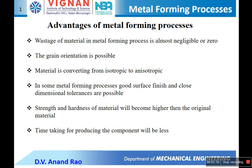Some of the advantages of metal forming processes: the wastage of material is almost negligible or zero. Grain orientation is possible, which improves mechanical properties. Metal forming processes are useful to convert materials from isotropic to anisotropic. In some processes, good surface finish and close dimensional tolerances are possible. Strength and hardness of material become higher than the original material, and time taken for producing a component is less.